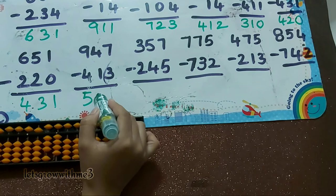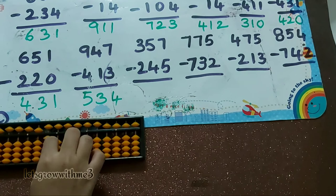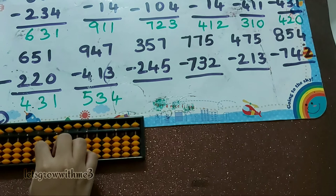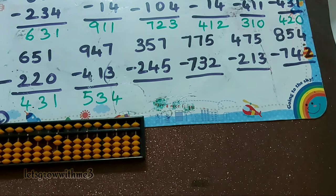Next one, 357 minus 245: minus 2, minus 5 plus 1, minus 5 — direct. So the answer is 112.